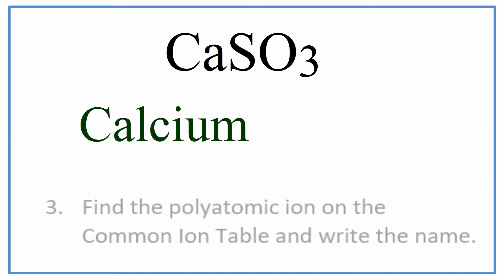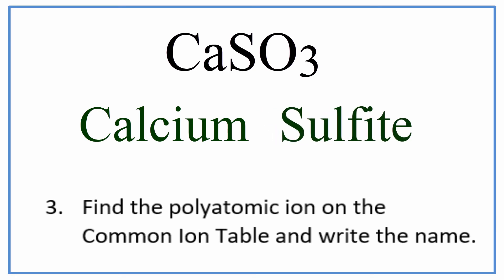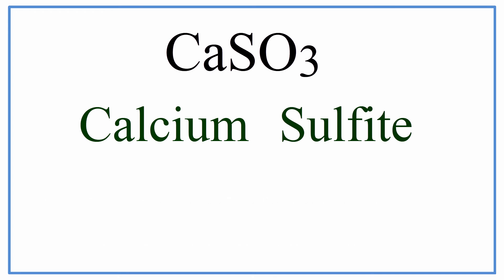Next, we need to write the name for the polyatomic ion, the SO3. Since it's not on the periodic table, we'll look it up on a common ion table. For SO3, we have the sulfite ion, and that's the full name for CaSO3: calcium sulfite.